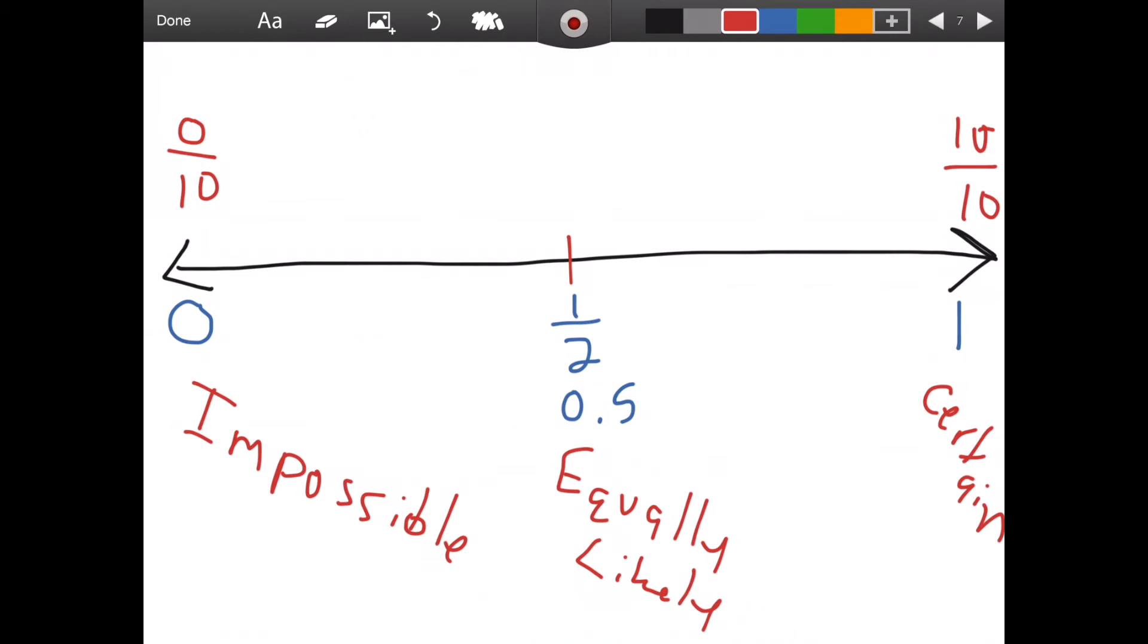Anything that is less than half but more than 0, we usually say that would be something that is unlikely. There are different degrees of unlikely. For instance, if I was on the number line right here at 4 tenths, that means I'm close to half and further away from 0. That's closer to being equally likely versus if I had 1 hundredth, which means it's only 1 out of 100 chance of happening. That's something that's very unlikely. So we have different degrees of being unlikely.